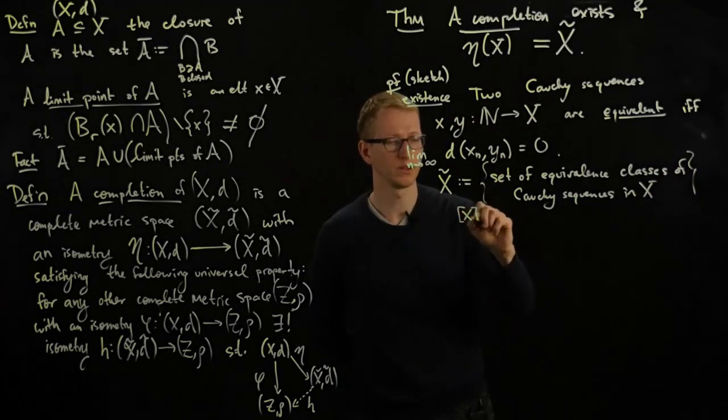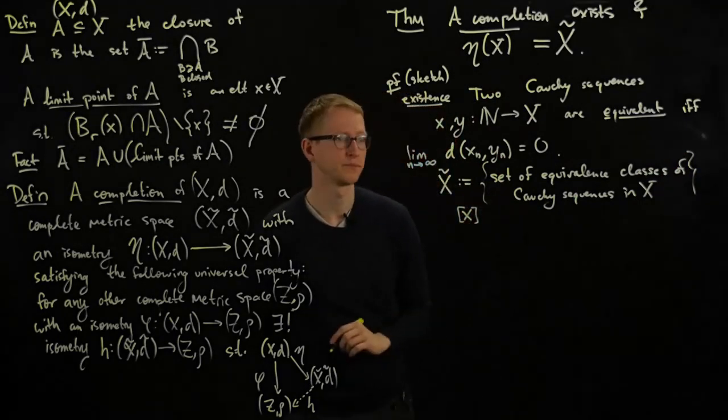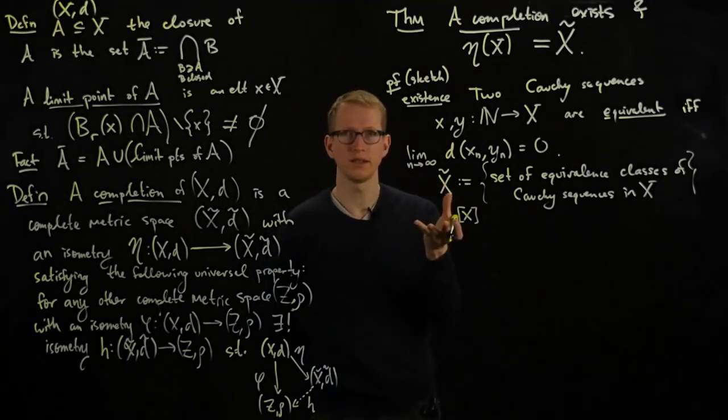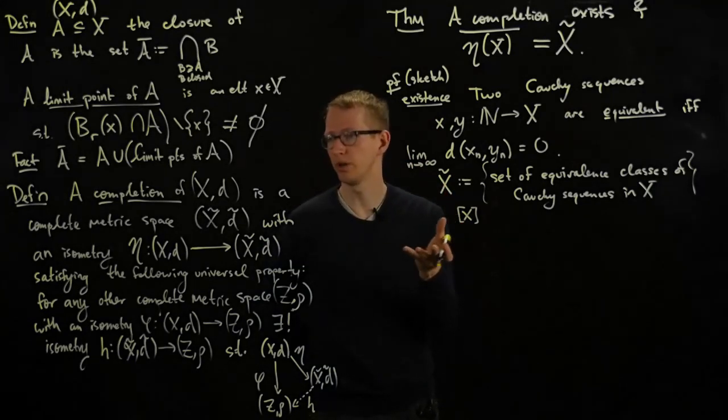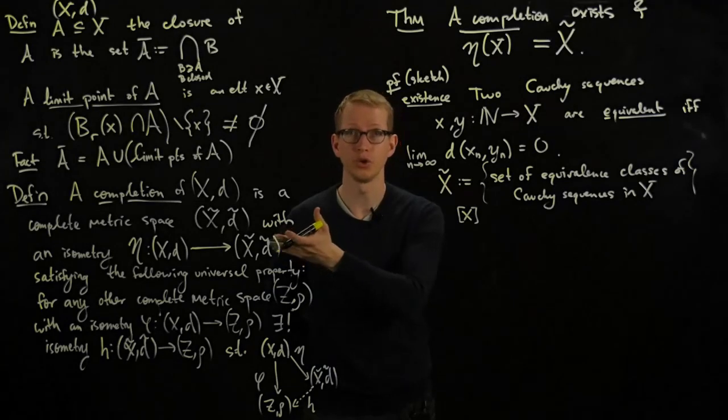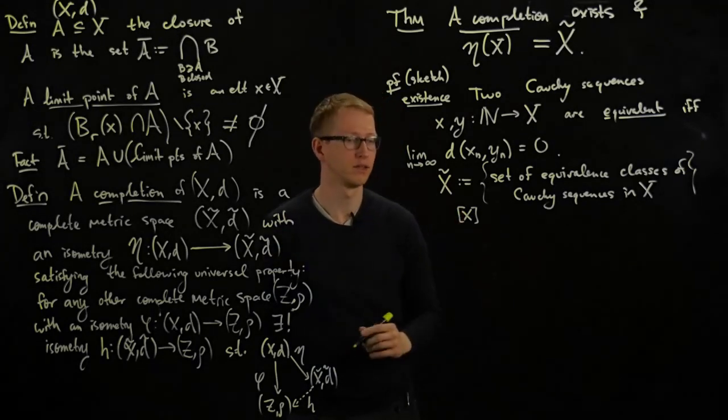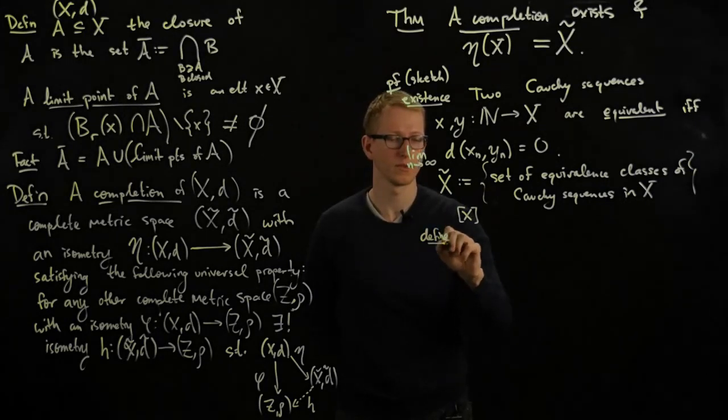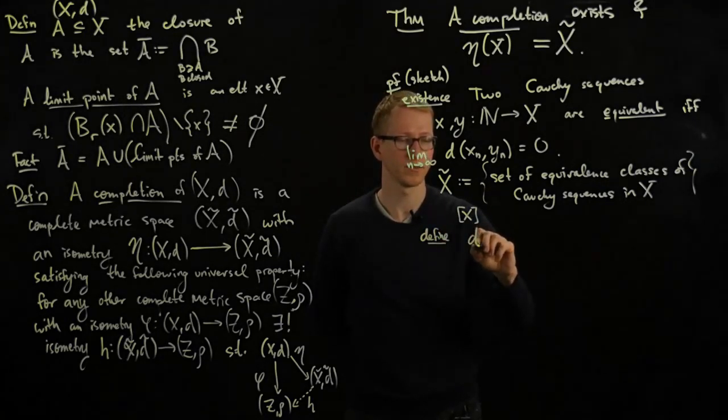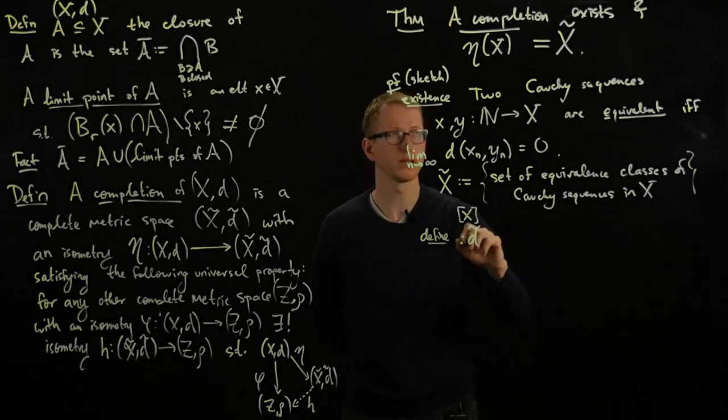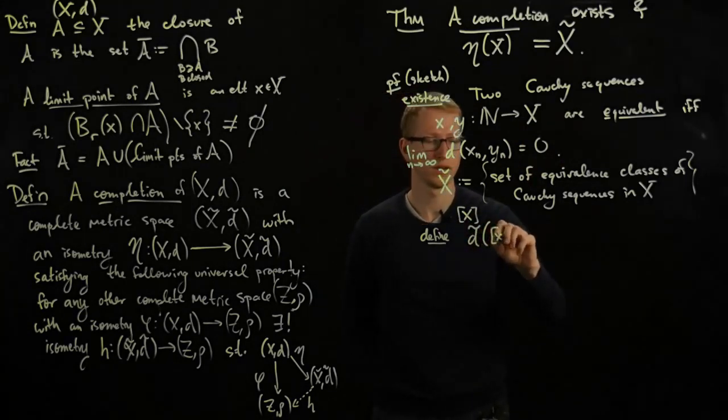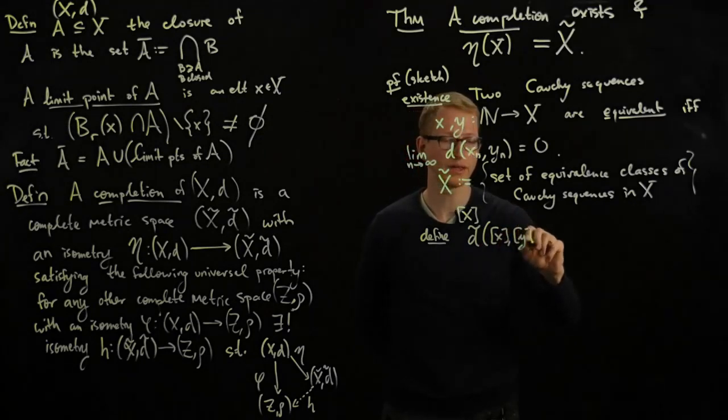we set x tilde as a set to be the set of equivalence classes of Cauchy sequences in x. We'll denote elements like this. So now I have a set, and what I have to do after this point is I have to try to define a notion of a metric on this set.